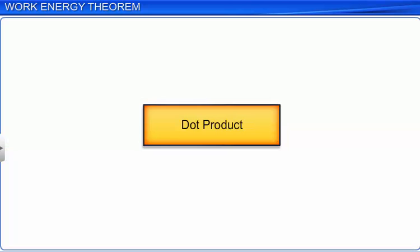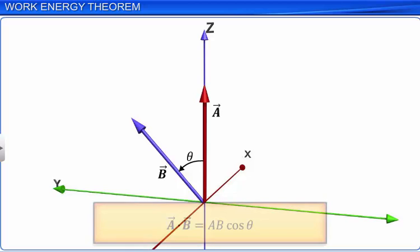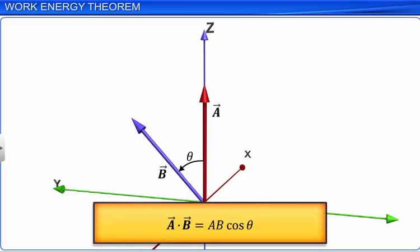Now let's understand dot product in detail. The dot product of two vectors A and B is equal to the product of the magnitudes of the two vectors and the cosine of the angle between the two vectors. The result of a dot product is always a scalar.